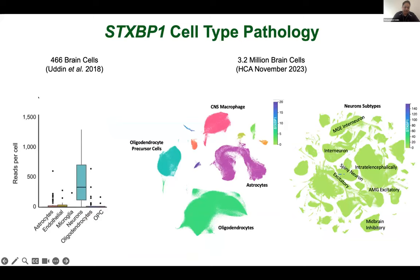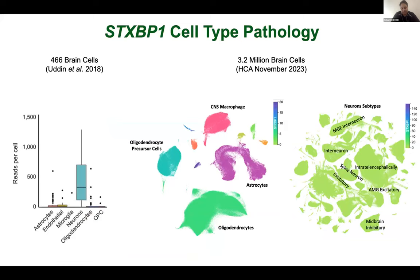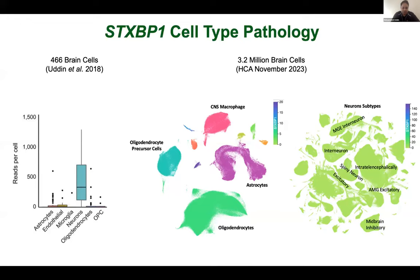Back in 2017, with the paper published in 2018, we looked at single-cell data from Stephen Quake's lab — 466 brain cells — and identified that this gene is predominantly expressed in neurons. Fast forward to the HCA atlas with 3.2 million brain cells: the data shows the same results. STXBP1 is highly expressed in different subtypes of neurons but not much in glial or other non-neuronal cell types, which makes sense as it is a neurotransmitter regulator.